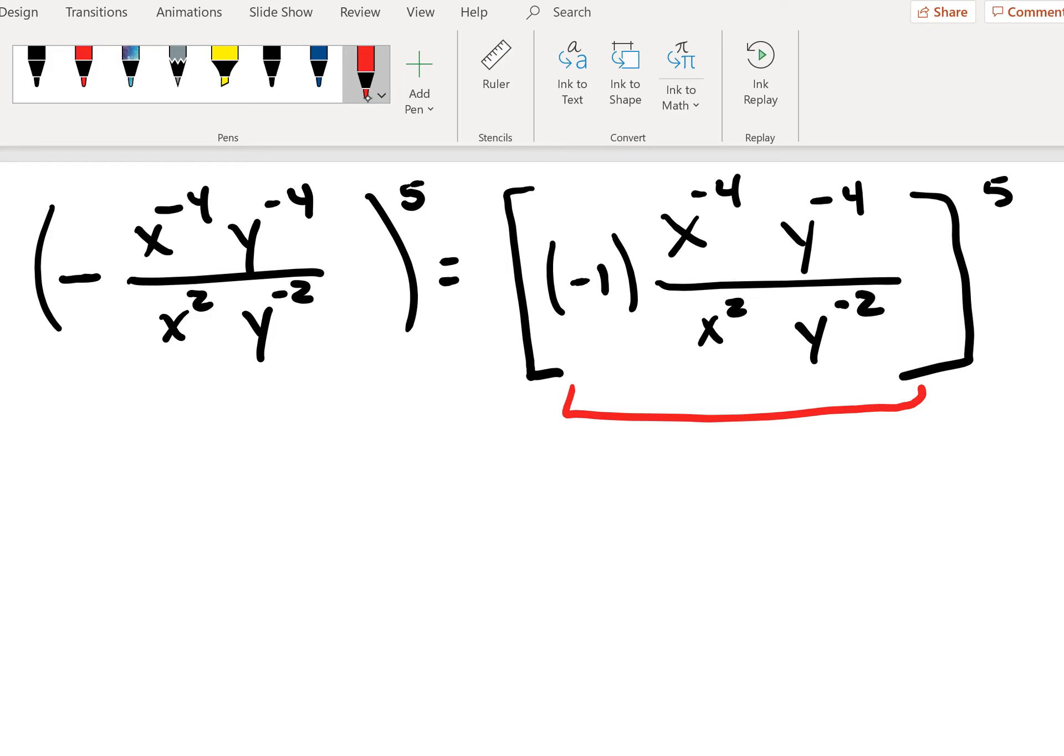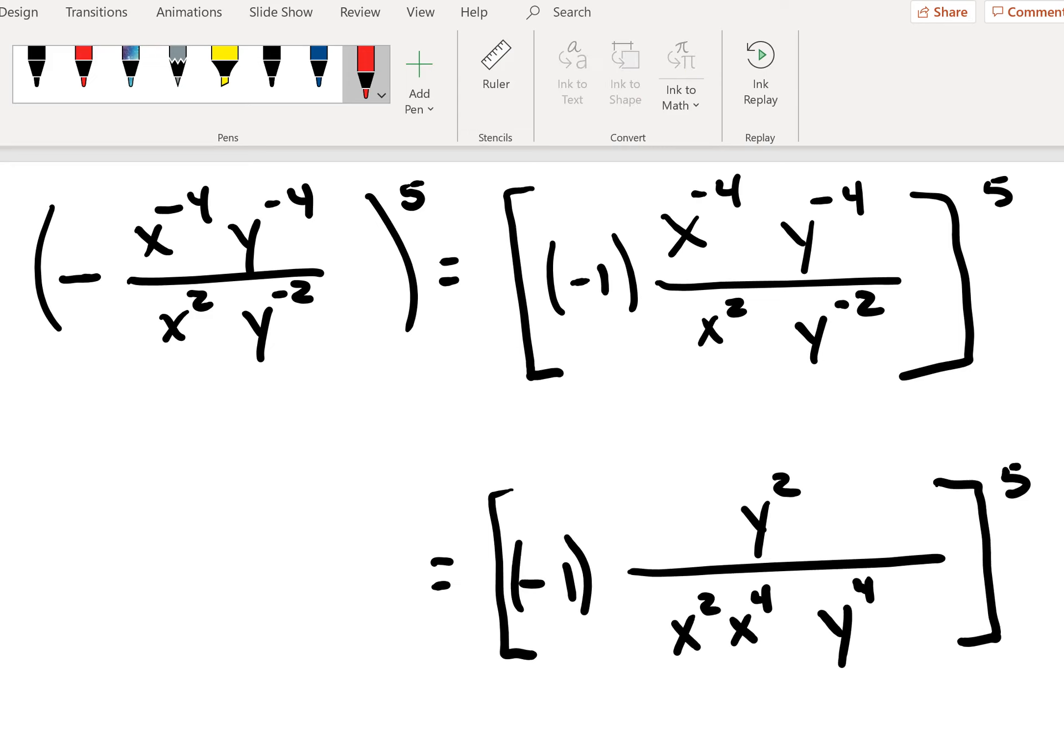Mastery of this process entails practice with this process. But the first thing that we can do here is we can bring the y to the minus two up as a y squared in the numerator. And then our x to the minus four can come down as an x to the fourth power in the denominator. And our y to the minus four can come down as a y to the fourth power in the denominator.